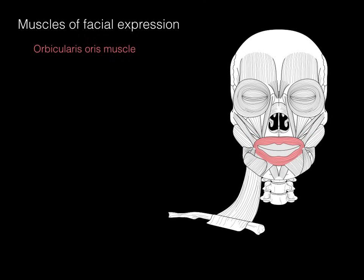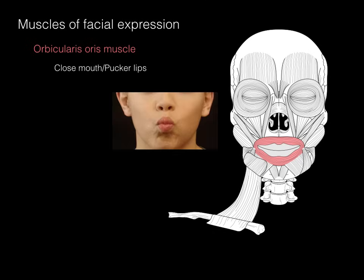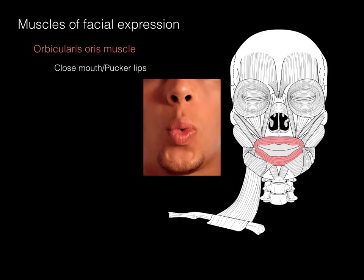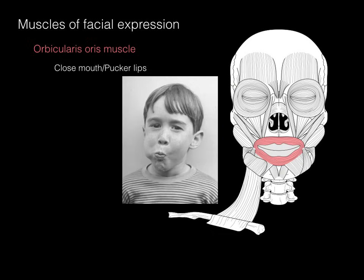Next is the orbicularis oris muscle. This is a circular muscle that surrounds the mouth, and its function is to close the mouth or to pucker the lips — as in going in for a kiss, whistling, or chewing to keep food in your mouth so it doesn't fall out.